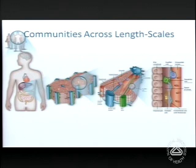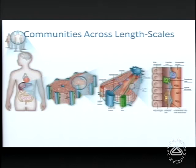We know that there are communities at many length scales, and there are whole disciplines dedicated to studying how individuals interact to have a collective function. At the level of a number of individuals displaying interdependency, we think about sociology. Within a particular individual, the interdependency of different organ systems when things are going well is physiology, and when things go awry, pathophysiology. At the length scale of a single cell with interacting pathways, we have cell biology.